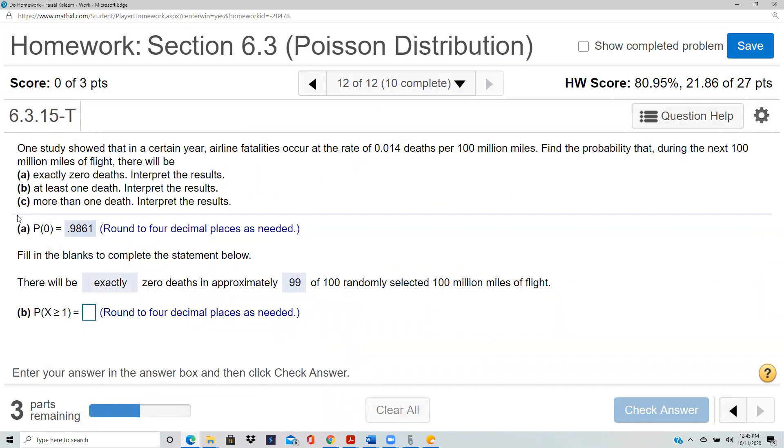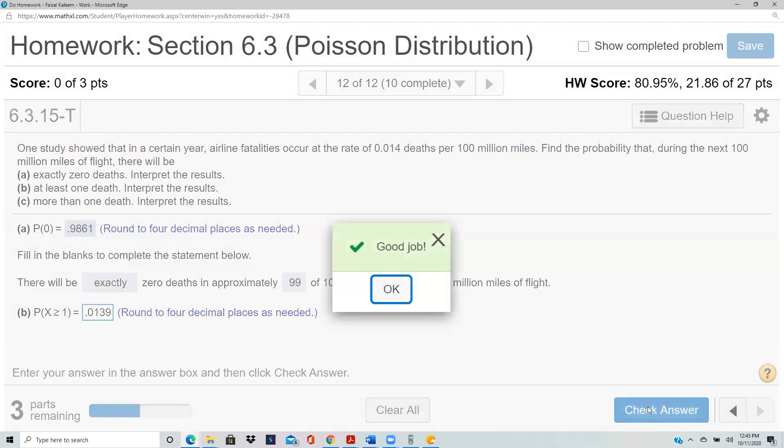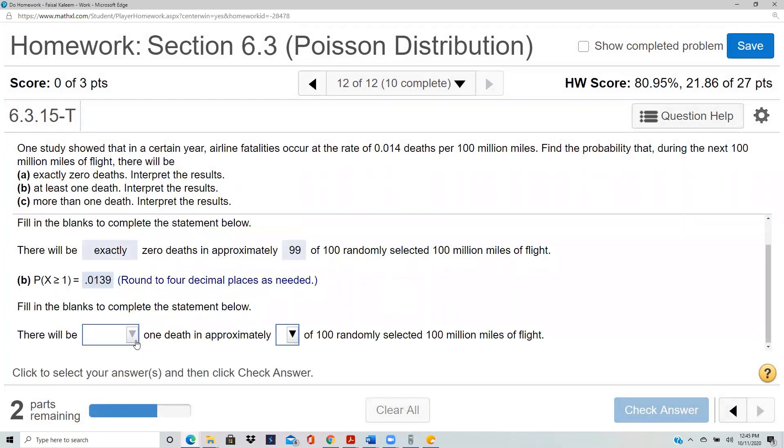Now they ask greater than or equal to one. Again, I can see that will be the complement of zero, so 0.0139. You can do it on StatCrunch if you don't want to do it through the complement. There will be at least one death in approximately - you multiply that answer by 100. This times 100 would be 1.39, so that'd be about 1.